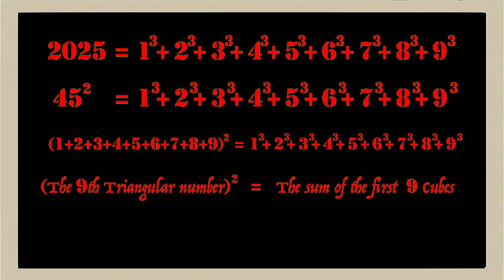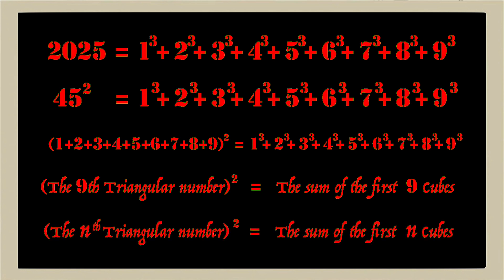So, back to our statements. And the last statement there, the ninth triangular number squared is the sum of the first nine cubes, generalizes to all triangular numbers. And we'd say the nth triangular number squared is equal to the sum of the first n cubes. And that's a general statement about triangular numbers, which can be proved mathematically.